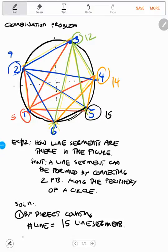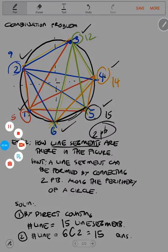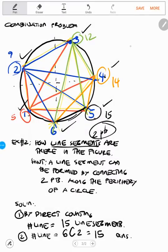Another solution is using combination. We have six points: one, two, three, four, five, and six. For a line segment to be drawn, we need two points. Therefore it is 6C2, which equals fifteen. So we have fifteen line segments. That's it for this type of combination problem.